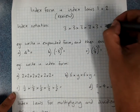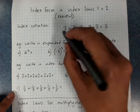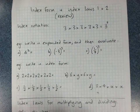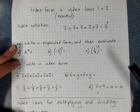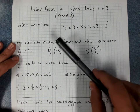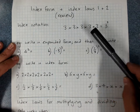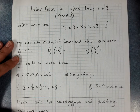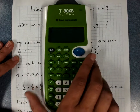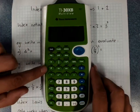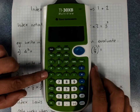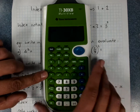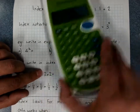This was 3, the base number, multiplied by itself 5 times. It's not the same thing as 5 times 3, which would be 15. This is 3 × 3 × 3 × 3 × 3. To evaluate it, we use the power button on the calculator: 3 to the power 5 equals 243.